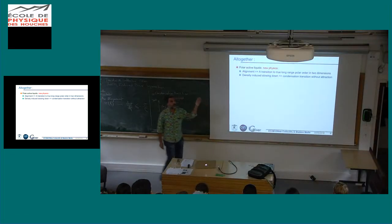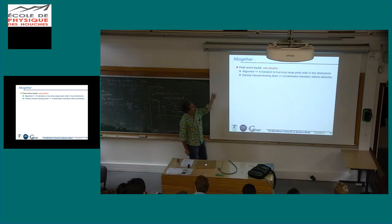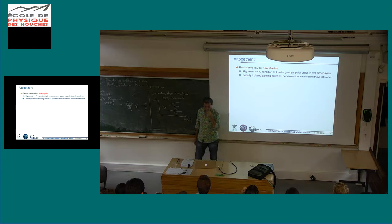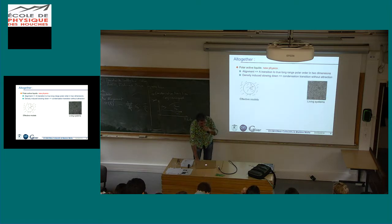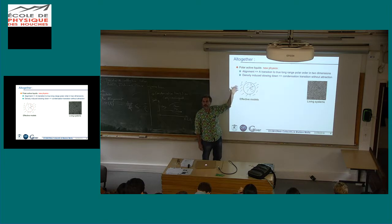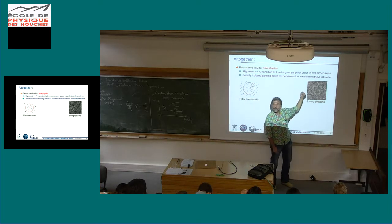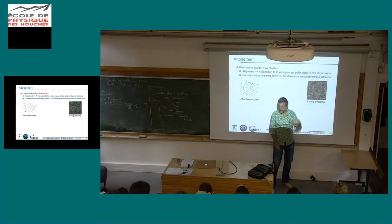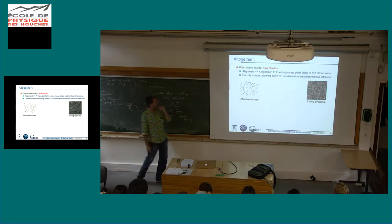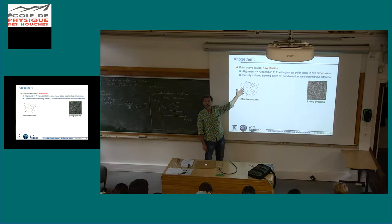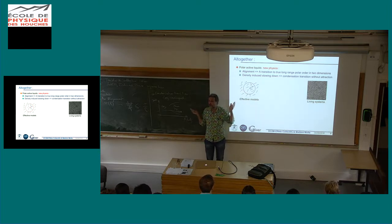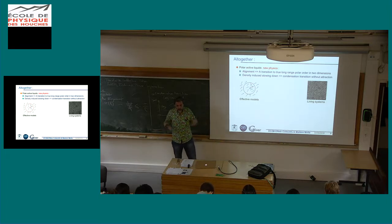To summarize: polar active liquids display new physics. Alignment promotes a transition to true long-range polar order in two dimensions, and density-induced slowing down produces a condensation transition without attraction. These were discussed in the context of effective models and simulations of more realistic spherical particles. Living systems like bacteria crawling on a substrate are elongated and involve chemiotaxis, hydrodynamic interactions, and more, so the question is how robust these basic scenarios are with respect to all those neglected fields.